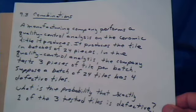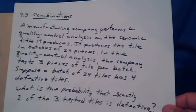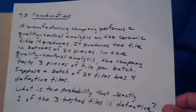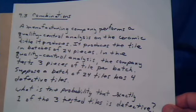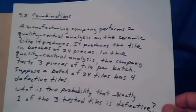Suppose a batch of 24 tiles has four defective tiles. So we already know that this batch has four defective tiles. What is the probability that exactly one of the three tested tiles is defective?